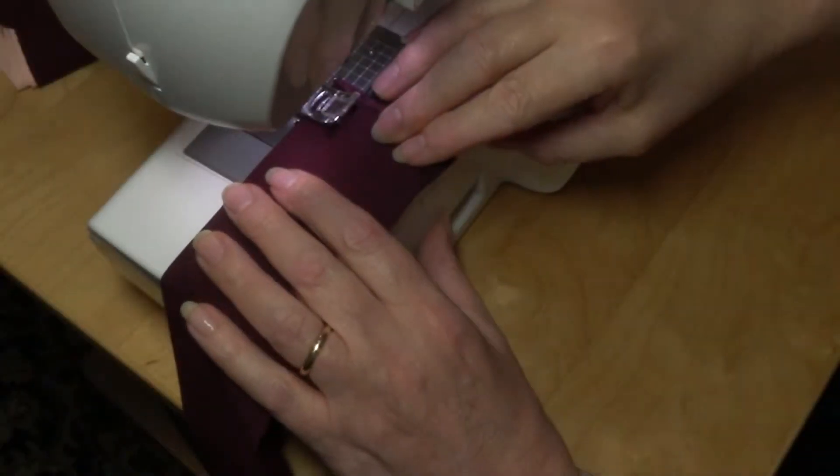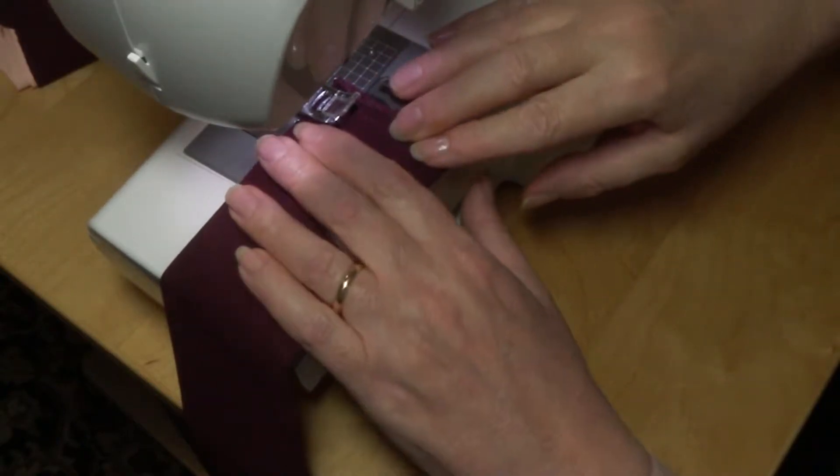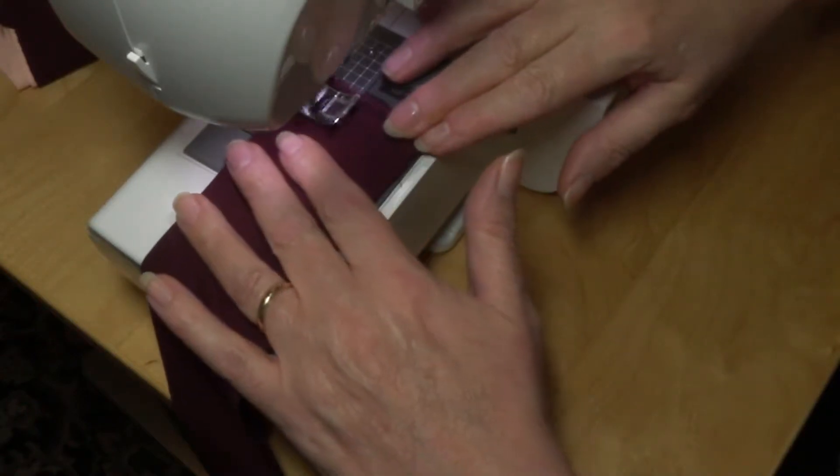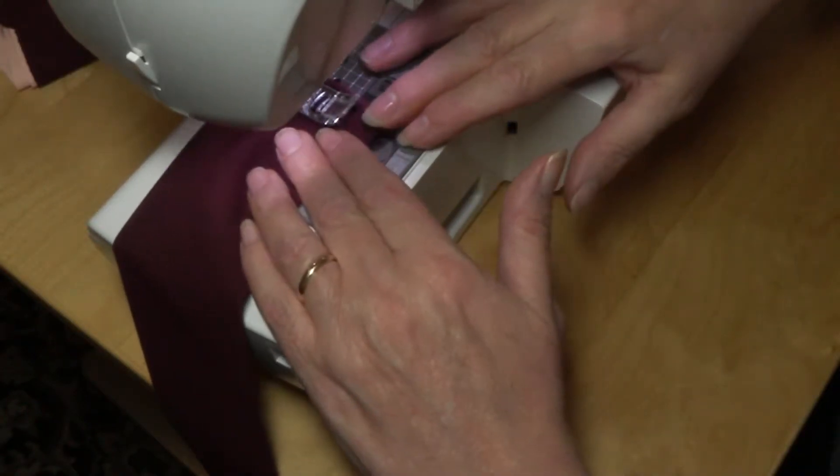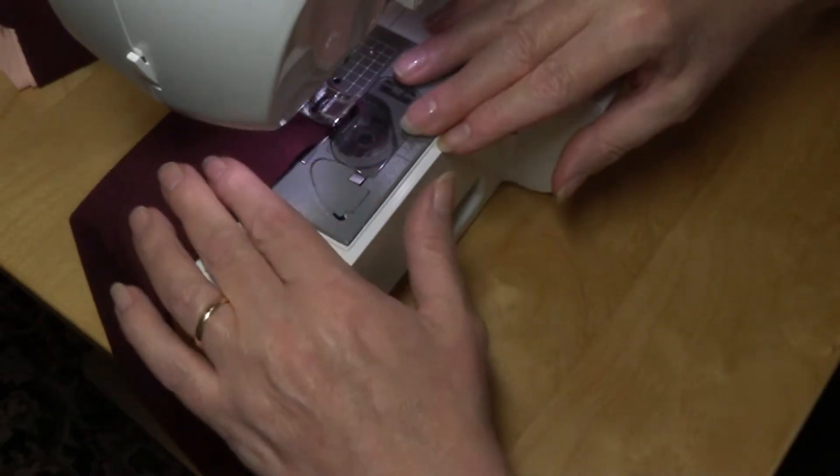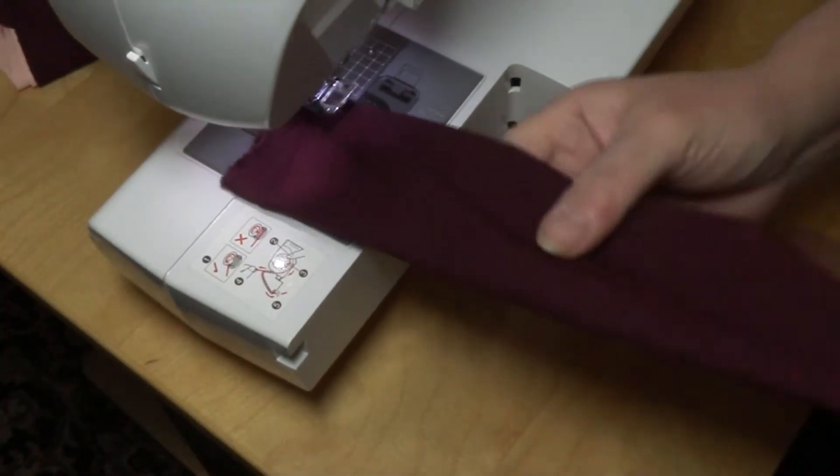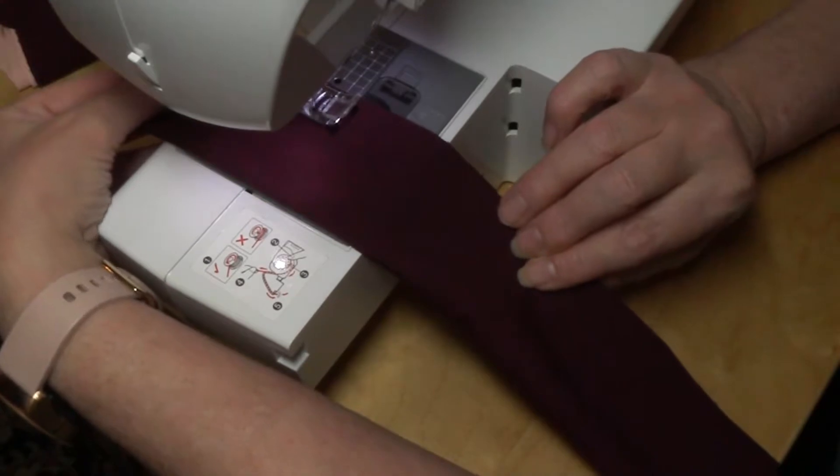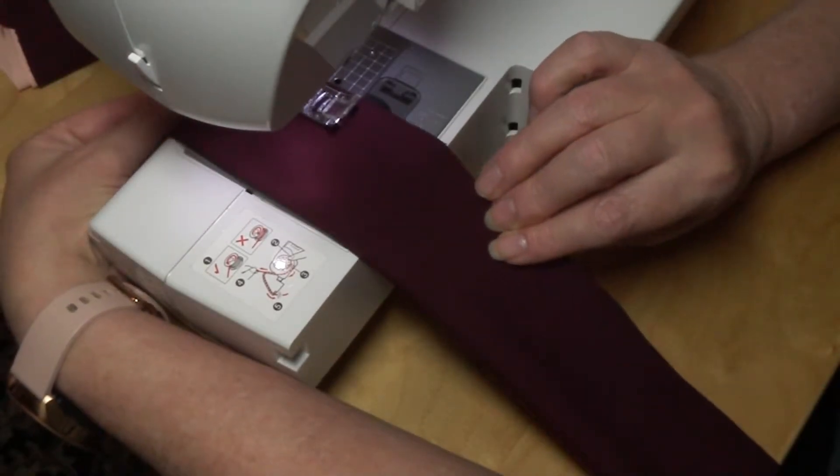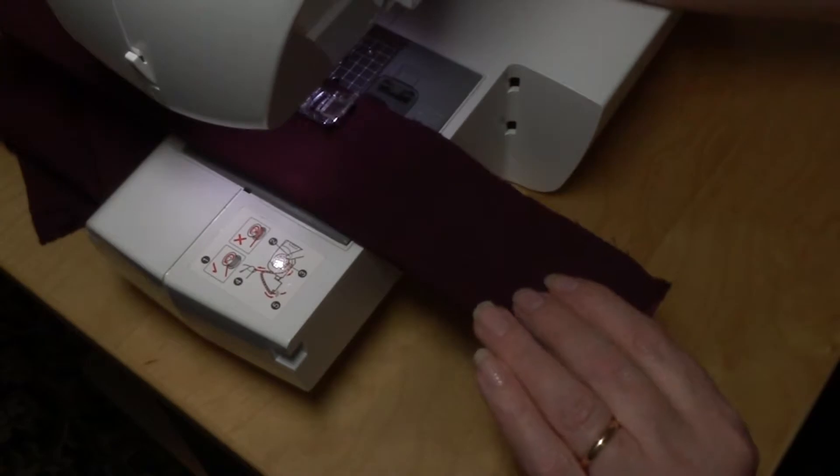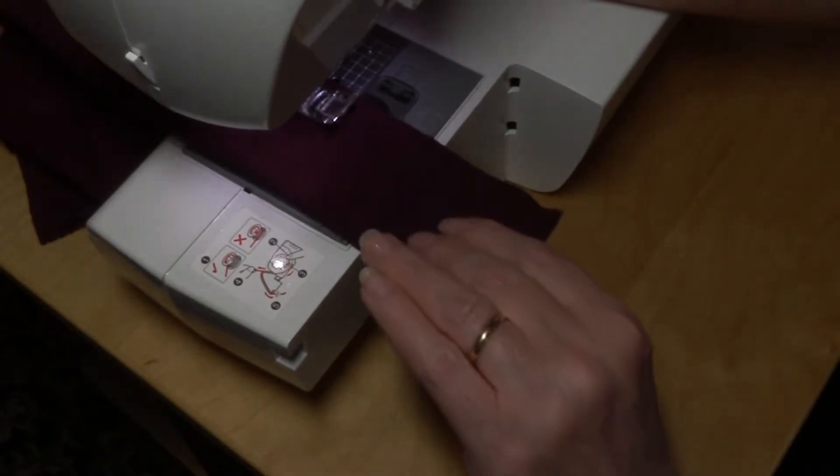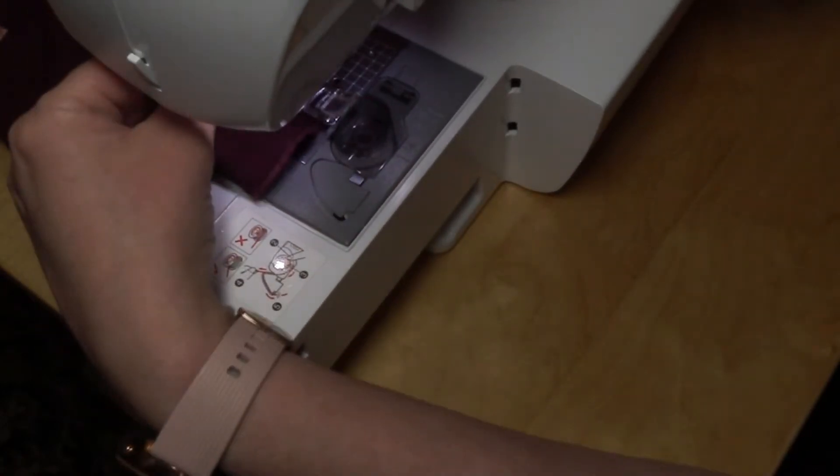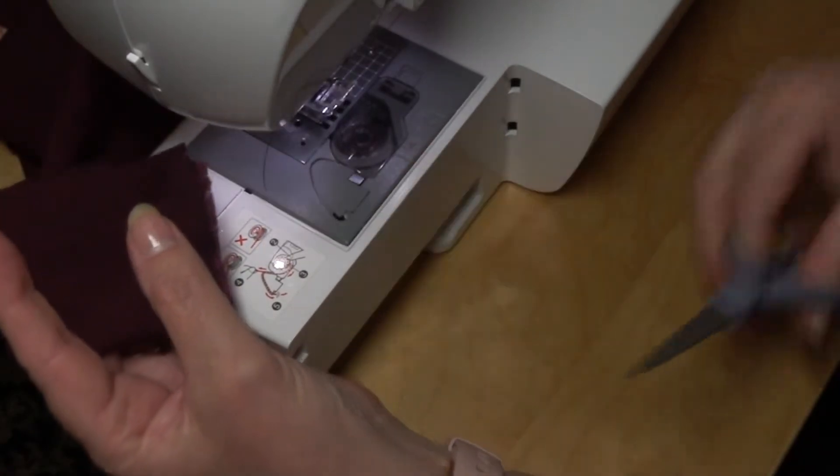And we are sewing the belt together for the second vest. And you backstitch to lock your stitches in place so that they don't come apart on you.